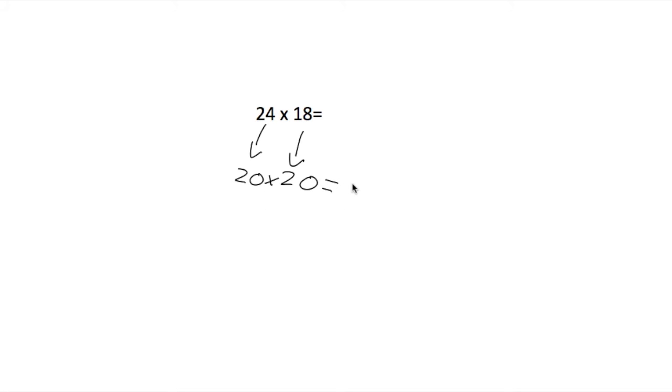And then we're going to do 20 times 20 would equal... 2 times 2 equals 4 and we have to add our zeros here, so 400. So our estimate answer would be 400.